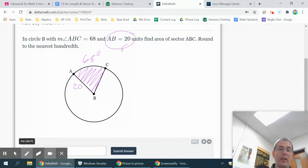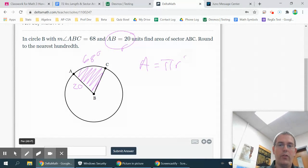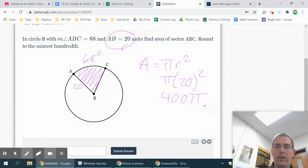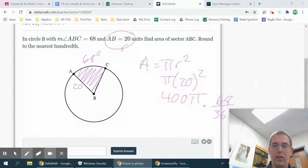So sector area, start by finding area of a circle. Area is πr². So πr² in this case would be π times 20 squared, which is 400π. And to go from area of the circle to area of just the sector, you've got to multiply by the appropriate fraction. In this case, 68 over 360, because 360 is a whole circle.